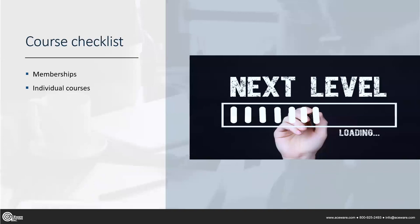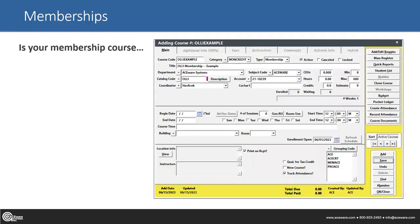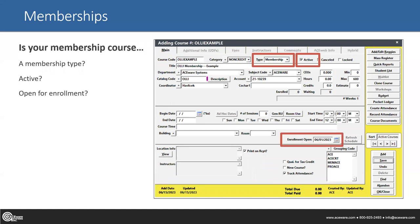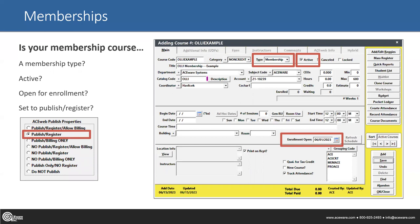When we're talking about a course checklist, I want to separate memberships and individual courses just a little bit. When you're setting up your membership courses, is your course a membership type? That's a really easy thing to overlook. Is it active? Is it open for enrollment? Remember when dealing with membership courses, there is an enrollment open date in the middle section, and it needs to be today or before today. And it's set to publish register on your AceWeb info tab — if it's set to no publish, it won't show up.